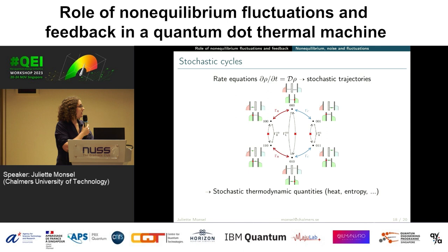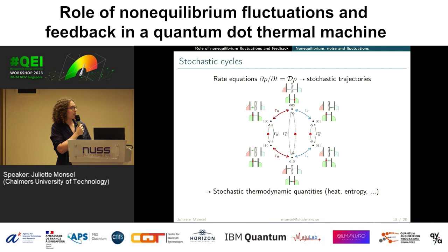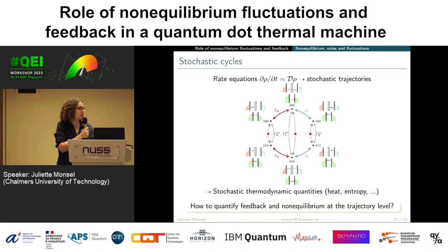We can also look at fluctuations from a different perspective — instead of calculating noise on currents, we can look at stochastic cycles. We have electrons jumping in and out of the system with many different possible configurations. We can unravel this master equation into stochastic trajectories with jumps and look at stochastic thermodynamic quantities like heat, entropy, and entropy production along those trajectories. What we want to understand there is how to quantify the respective roles of feedback, information, and non-equilibrium at the trajectory level.